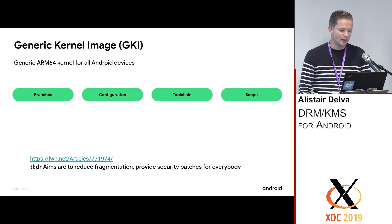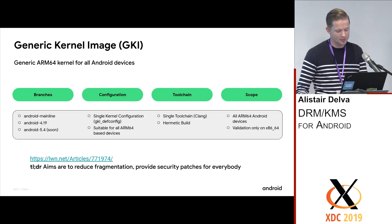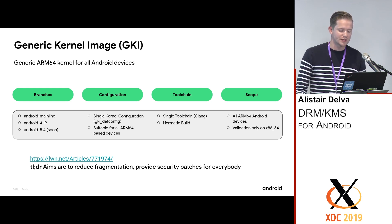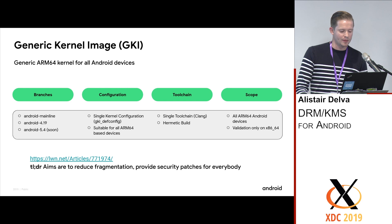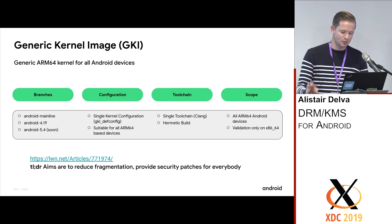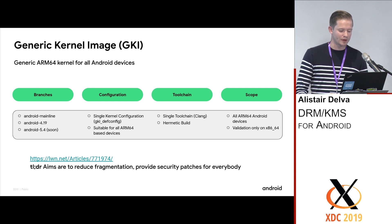There's an article on LWN about GKI and its aims to reduce fragmentation. The branches GKI will be supported on are 4.19 and 5.4, and any kernel coming out of Android moving forward. What GKI really is, is just the defconfig — nothing more than that, plus the kernel tree itself. The idea is it will work on all ARM64 devices, with a validation target for x86-64 for our cloud platform. It will always be built with Clang and always hermetically built, so it's reproducible. These images will be available in AOSP — anyone can download them. They'll essentially be the Android common kernel derived from upstream, compiled in a specific configuration.